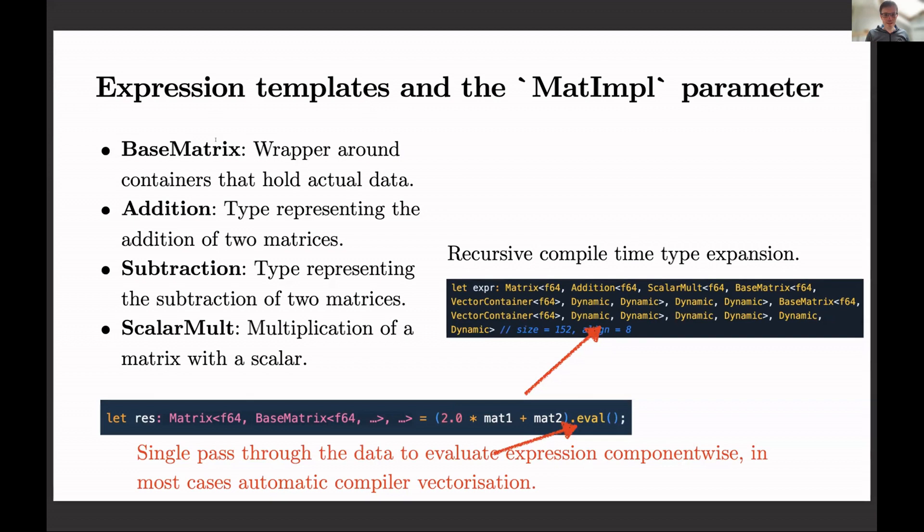So, for example, let's look at the bottom at this very small computation here. Let res equals 2.0 times MAT1 plus MAT2, and then we say .eval. The interesting thing is what happens if you say 2 times MAT1 plus MAT2. If you have something in Python or certain other linear packages which do not support lazy evaluation, what you do here is you compute 2 times MAT1. This creates a temporary, and then it's added towards MAT2 to another result. But you have your temporary allocation in the middle. And you also have several passes through the arrays, not just one.